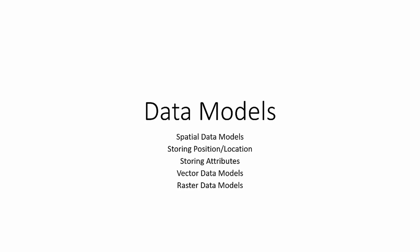Good evening, everyone. I wanted to give a brief lecture for week two on spatial data models. I'll introduce what spatial data models are, talk about how we store position and location in spatial data models, how we store attributes, the two core data models — vector versus raster — and then briefly touch on TIN as a unique data model type.